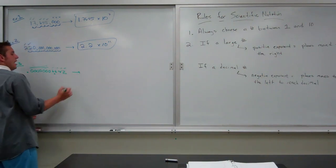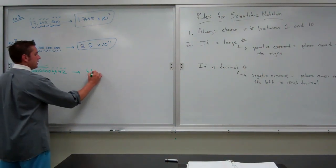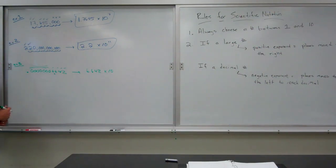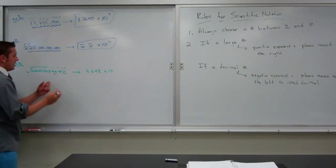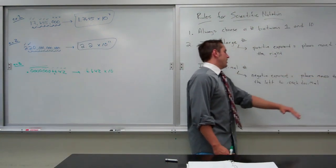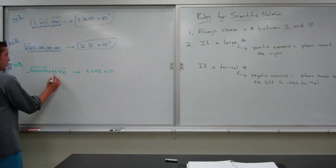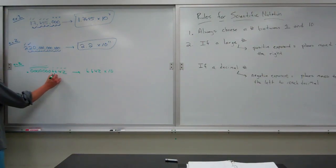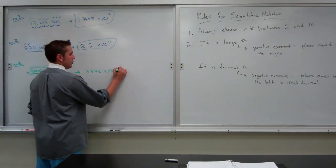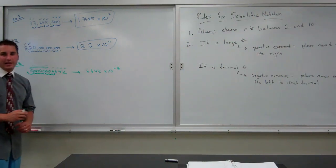So, the number between 1 and 10 with four sig figs will be 6.642 times 10. And then, we have a decimal. It will be a negative exponent to the number of places moved to the left to reach the decimal. So, here's where I put the decimal in. So, it was 1, 2, 3, 4, 5, 6, 7, 8 places to get to the decimal which means this will be negative 8.